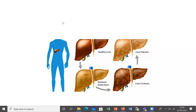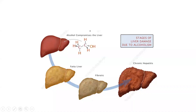Here is a healthy liver and here is the steatosis or fatty liver — you can see the deposition of fat in the liver. This shows the stages of liver damage due to alcoholism. On consumption of alcohol, there is slowly deposition of fat in the liver. This deposition of fat initially starts in the perivenular hepatocytes, but slowly the entire lobule starts getting affected.